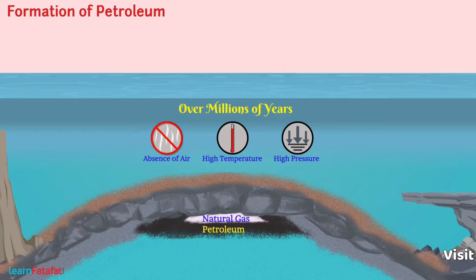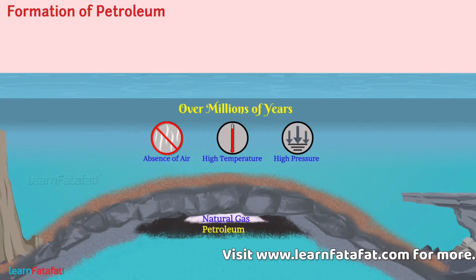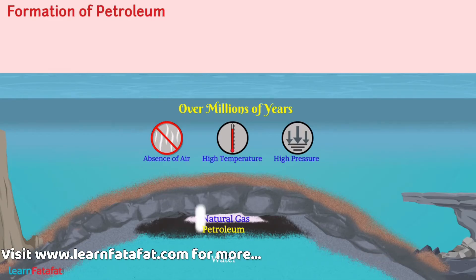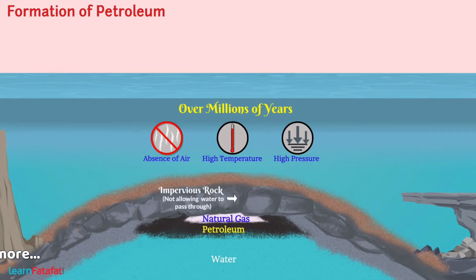The formed petroleum, being lighter than water, floats over the layer of water and remains compressed by natural gas in a dome-shaped impervious rock called a rock cap.